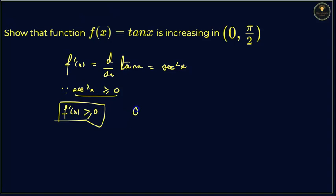So f'(x) is greater than or equal to 0, which means that the function is increasing in between 0 to 5. This is the step you have to find, and then write the answer: f'(x) ≥ 0 which means f(x) = tan(x) is always increasing in between 0 to 5.